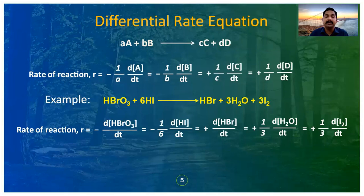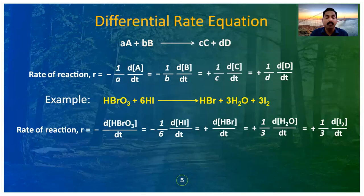If we just write −d[HBrO₃]/dt equal to −d[HI]/dt, they will not be equal. Why? Because in the HI case there are 6 moles, whereas HBrO₃ is 1 mole. So to equate them, we need to divide by the number of moles.